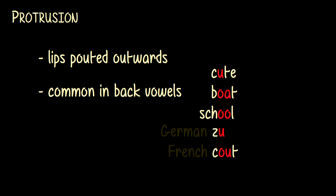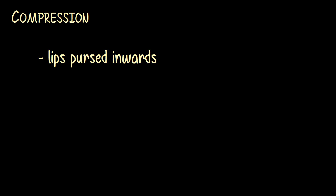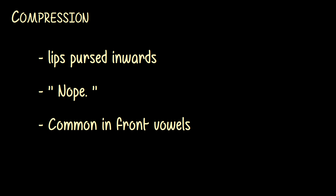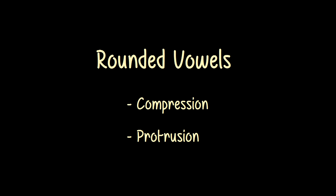In other languages it's the same thing — German 'zu' and French 'cou' are both pronounced with protruded lip rounding. Which brings us to the other type: compression. Compression is when you round your lips by pursing them slightly inwards without any kind of pouting. It's kind of like when you say the word 'nope' in a really matter-of-fact way. This type of lip rounding does not exist in English vowels, but it's common in front rounded vowels around the world. German 'tü' and French 'bu' are both pronounced with compressed rounding. I won't go into the implications of these two types for the Swedish vowels just yet, but as I'm sure you've already guessed, they are going to matter — because when it comes to rounded vowels, Swedish is kind of messed up. But we're saving that for part 2.